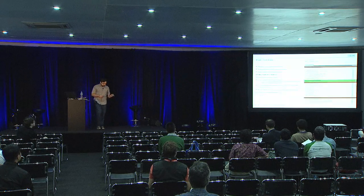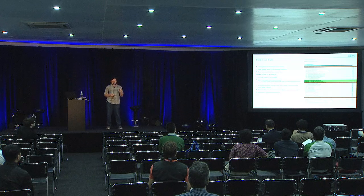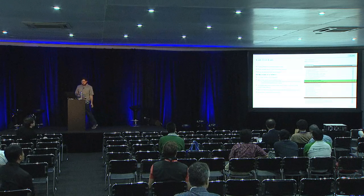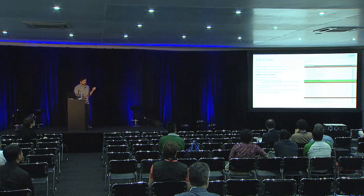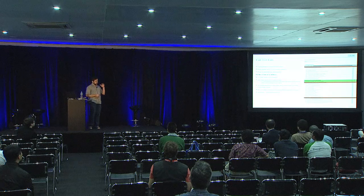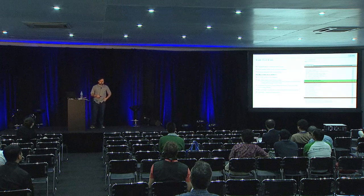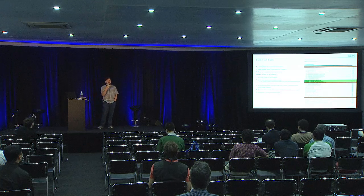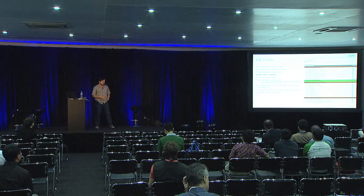Unit tests are the next class of failures. OpenStack is a very deep test culture — it is a foundational principle that you do not deliver code without tests. If you look at Nova, the lines of unit test code in the tree are about the same as the lines of functional code — it's like half tests, half function, which is a good place to be.